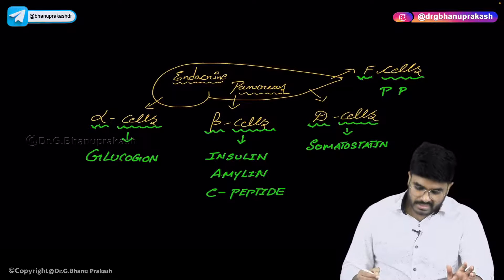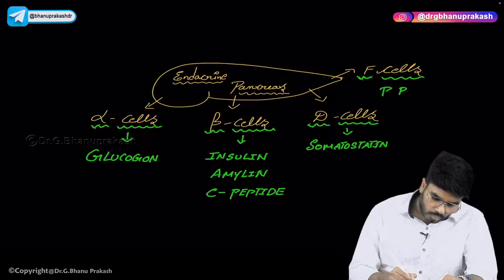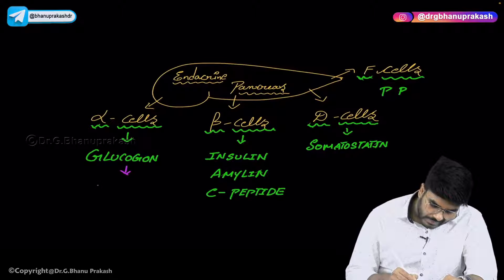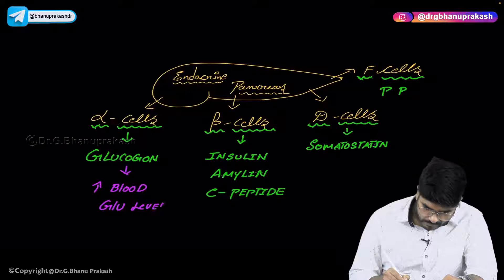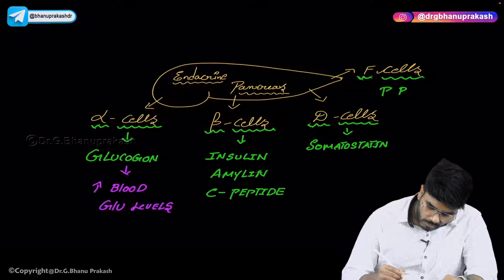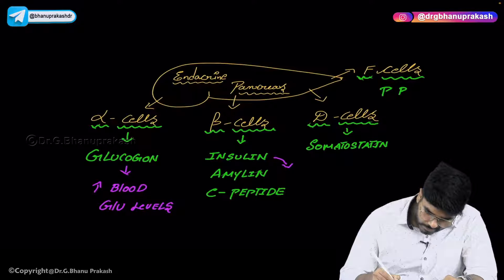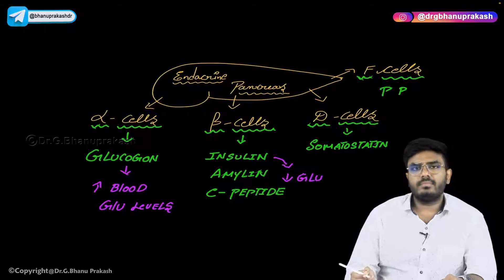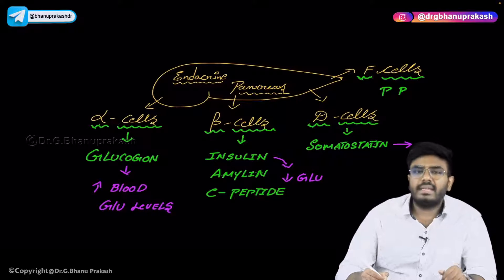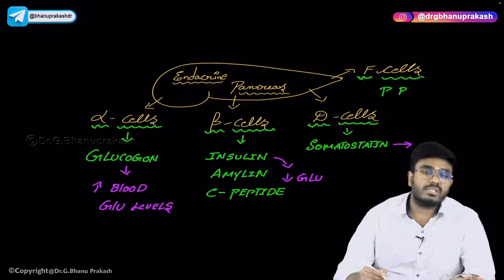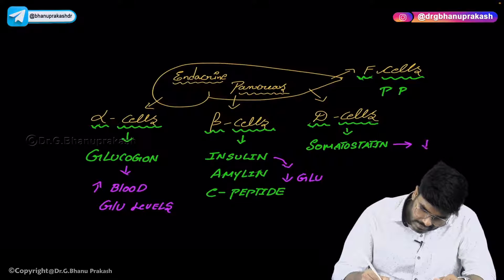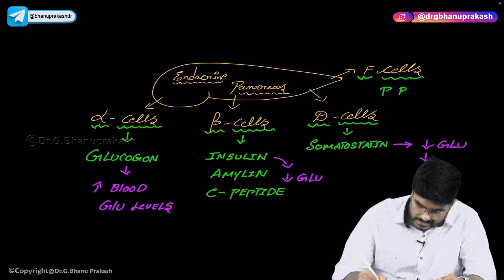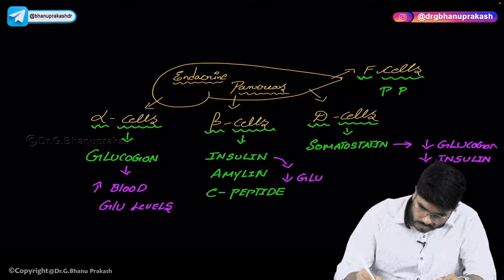Now let's discuss the functions of these hormones. Glucagon is going to increase the blood glucose levels. The most important hormone, insulin, is going to decrease the blood glucose levels. Somatostatin decreases everything — it decreases growth hormone production, insulin production, glucagon production, and gastric acid production. So somatostatin decreases both glucagon and insulin.